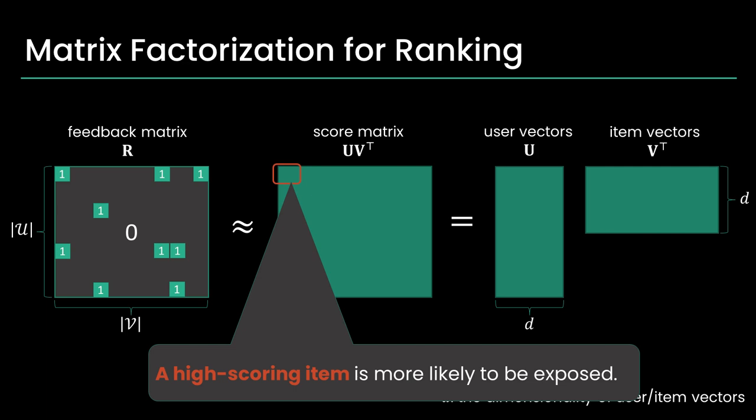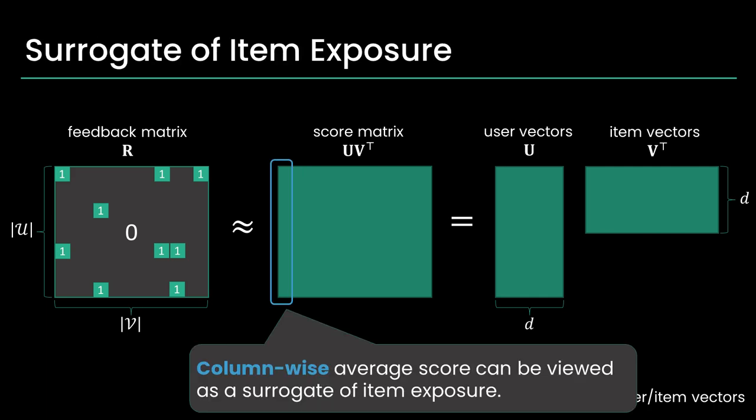In other words, the higher an item score in a user's row, the higher its rank and the more likely it is to be shown to that user. Our idea is quite simple. We consider the average of each column in the score matrix to represent how likely an item is to be exposed to all users.